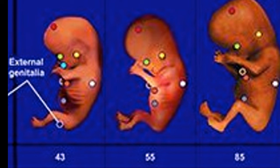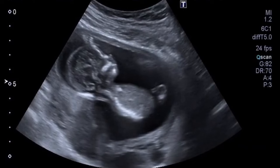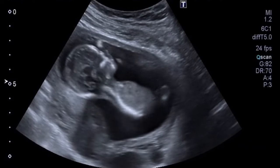In week 10, the fingernails develop and the genitals develop further. In week 11, the bridge of the nose develops. In week 12, the baby may start its first defecation into the amniotic fluid and begins to respond to skin stimulations.